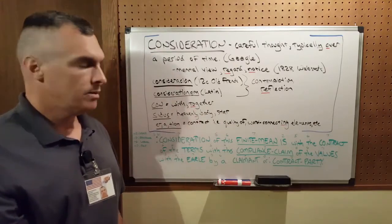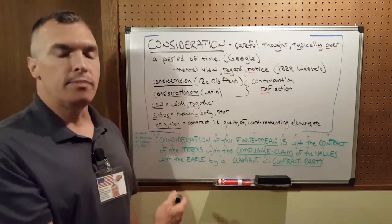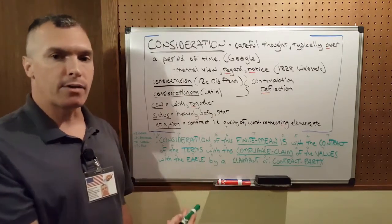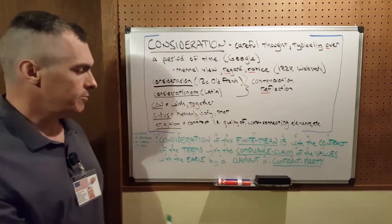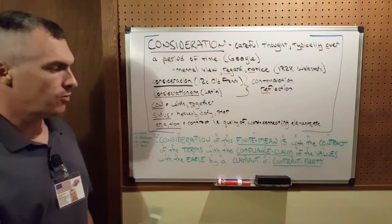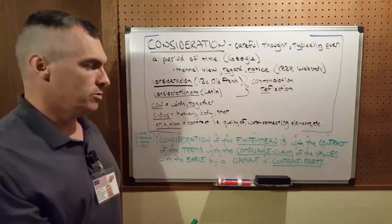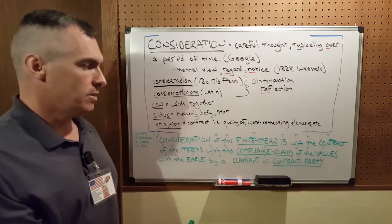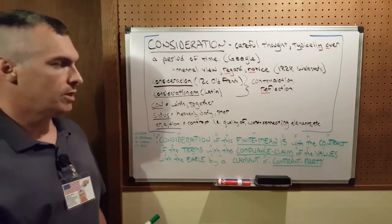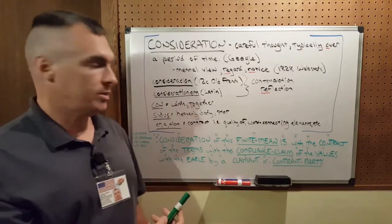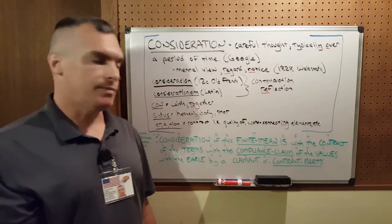The reason why this gives word closure and is valid is because it can be read the same and means the same forward and backwards. If I were to read it backwards, it would say: for a claimant or for a contract party of the ERL is with the values of this compliance claim with the terms of the contract with this finite mean by the consideration.